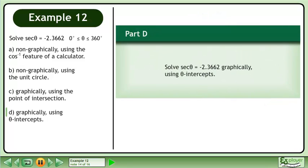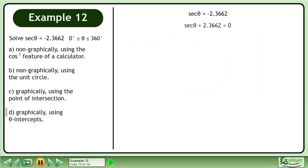In part D, solve secant theta equals negative 2.3662 graphically using theta intercepts. We write the equation as secant theta plus 2.3662 equals 0.